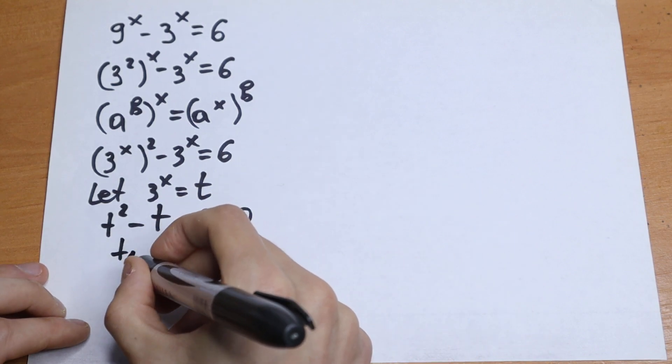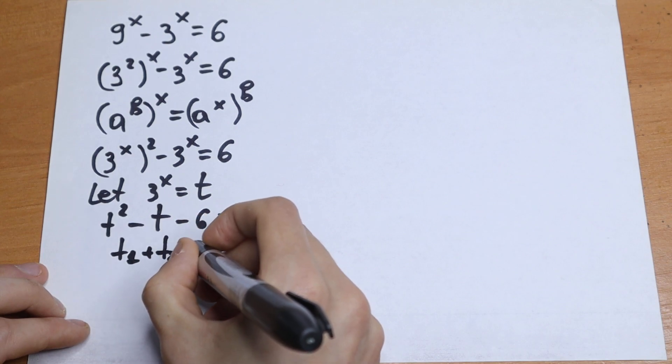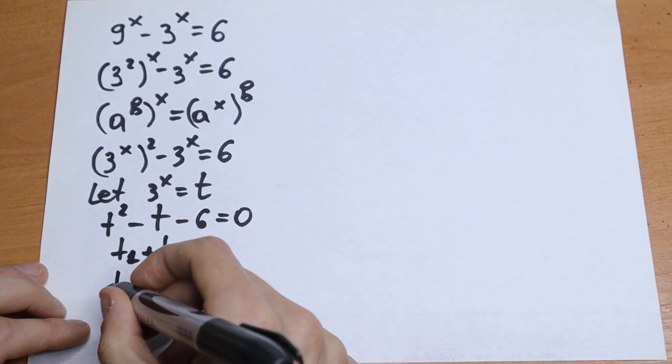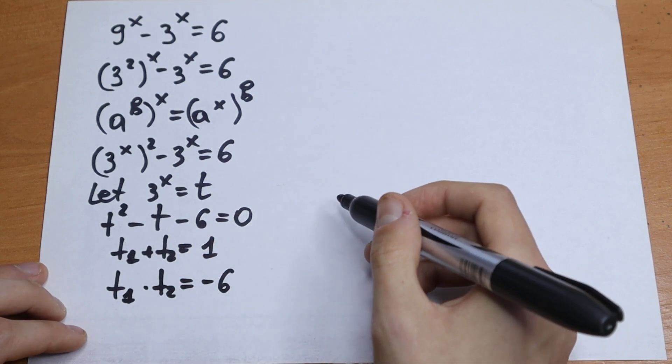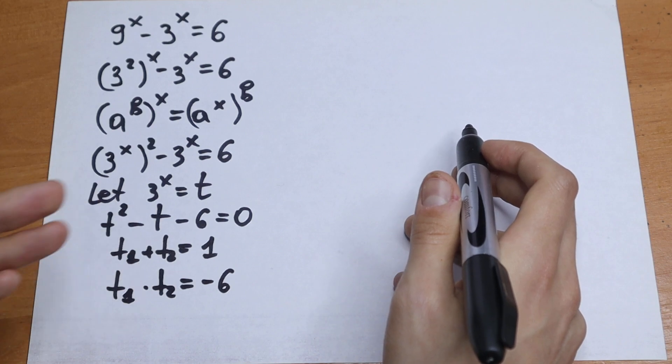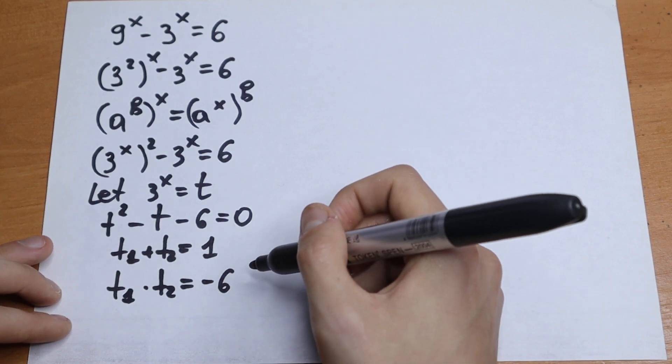So t1 plus t2 equals 1, and t1 times t2 equals minus 6. Let's think about the roots. The sum is 1 and the product is minus 6.